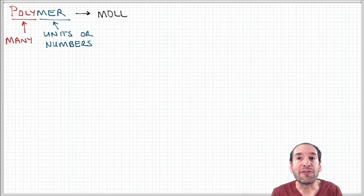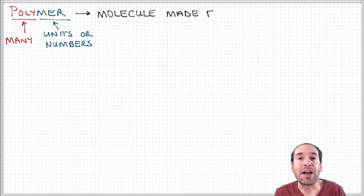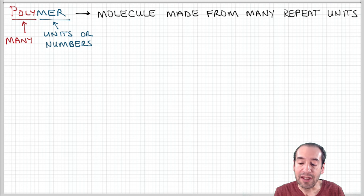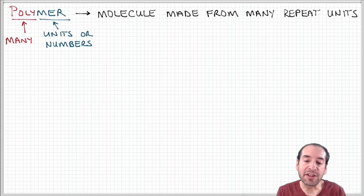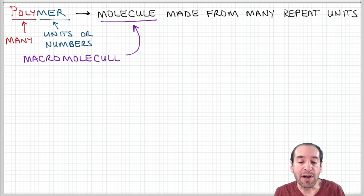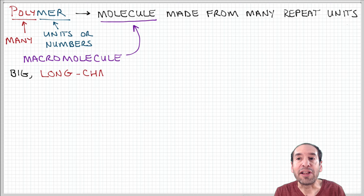Based on this, we can define a polymer as a molecule that's composed of many repeating units. But what kind of molecule is it? What does it look like? Clearly, it's going to be a big molecule because it's composed of many repeated parts, a macromolecule, if you will.